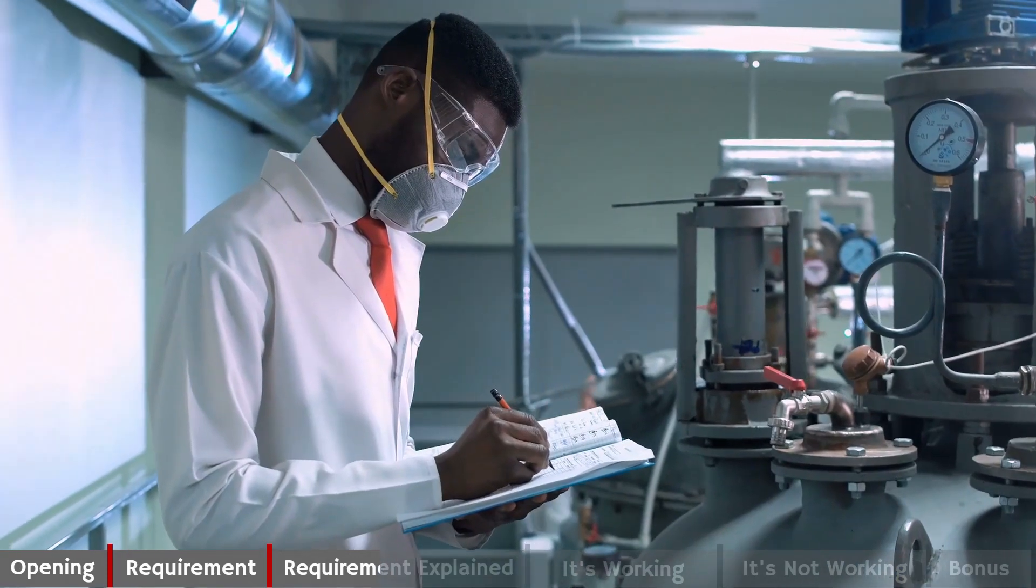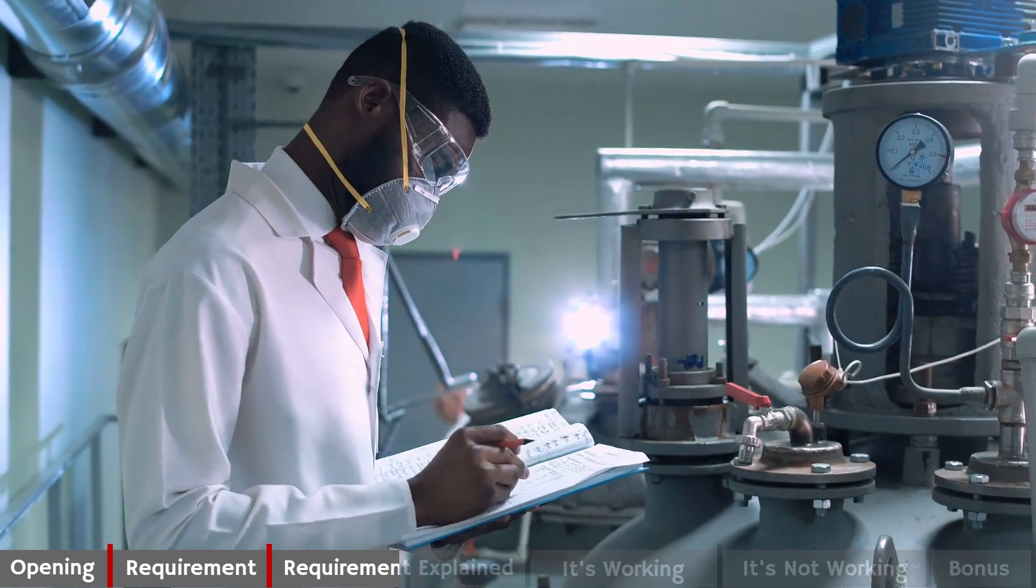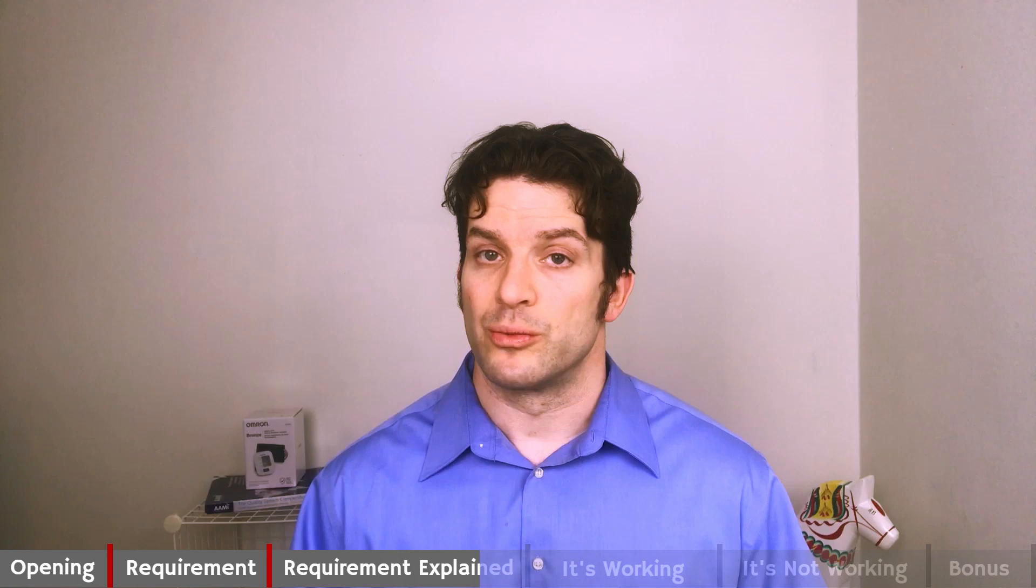When it comes to final release inspection, we have to ensure that all of the requirements outlined within our DMR or Device Master Record are fulfilled and everything is signed off before product release. When we're doing the inspections, we will generate records or test records. There are minimum requirements for each test record: the testing that was done, the date, who did the testing, what was the result, and what equipment was used during the actual inspection activity.